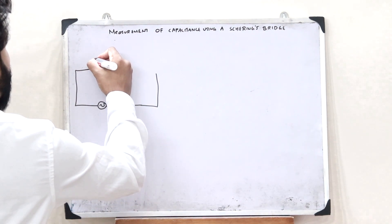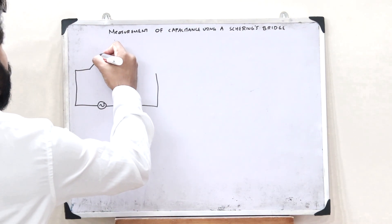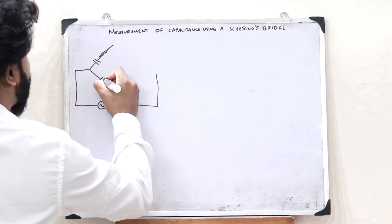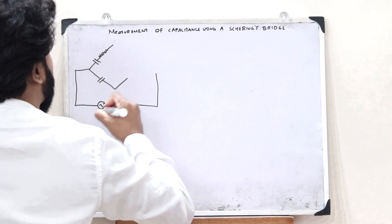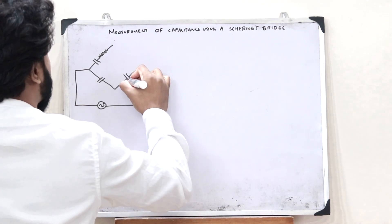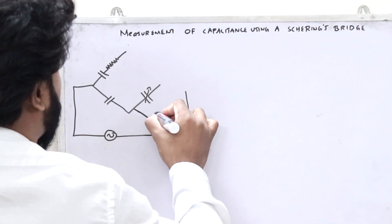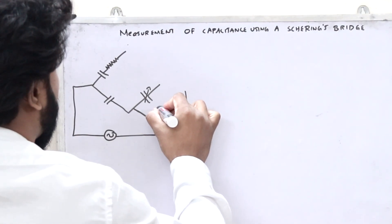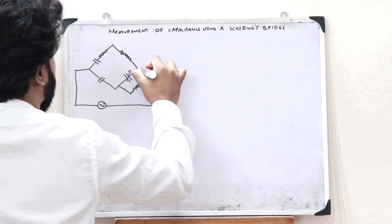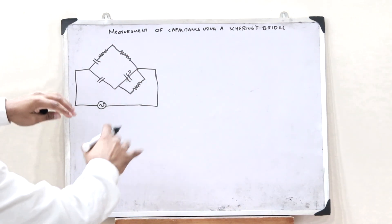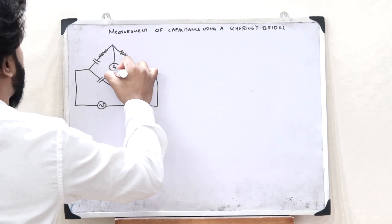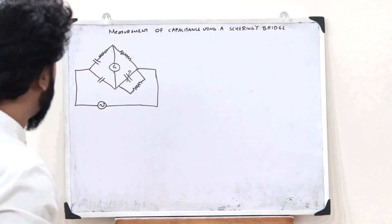Here on the top, it has a particular capacitor and a particular resistor. But on this particular branch, it just has a particular capacitor. What we observe is that we provide a variable capacitor here, and parallel to this particular variable capacitor, we connect a resistor. Then here we connect a particular resistor. And over here, we connect a particular AC galvanometer.